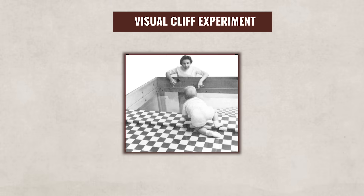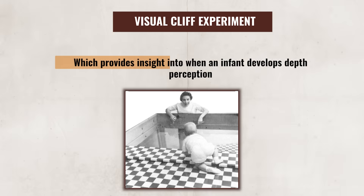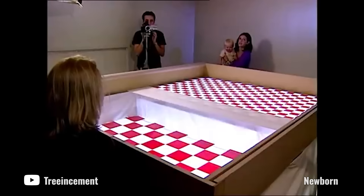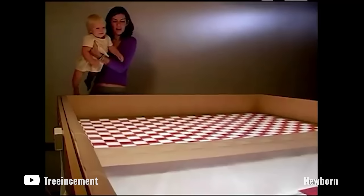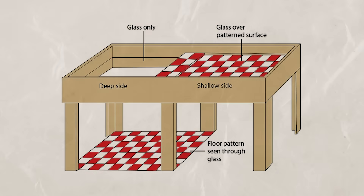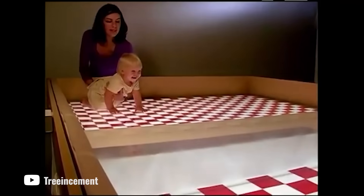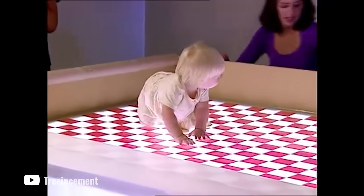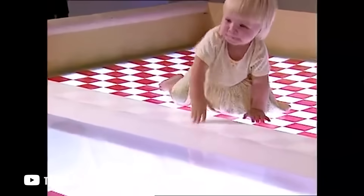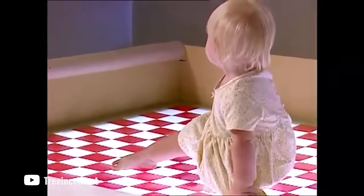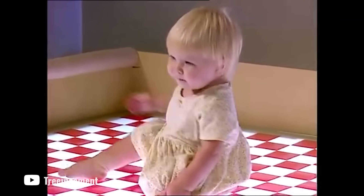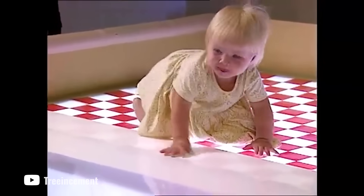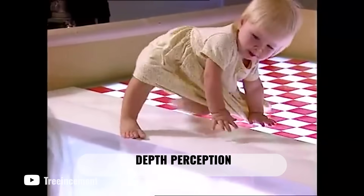One study I want to highlight when it comes to development is the visual cliff experiment, which provides insight into when an infant develops depth perception. In this study, researchers used a visual cliff apparatus to create the illusion of a drop-off. A sturdy glass surface was placed over the drop, ensuring that infants couldn't actually fall. The infant was placed on one side while their parents stood on the other side, encouraging the infant to crawl to them. If the infant hesitated or refused to cross the glass-covered drop-off, it indicated that the infant had developed depth perception. This experiment highlights how quickly infants gain the ability to perceive depth.